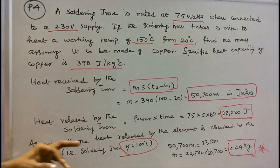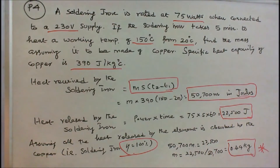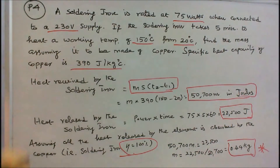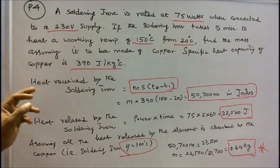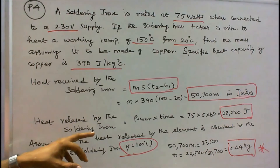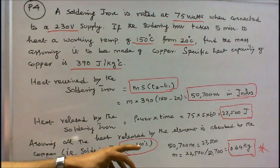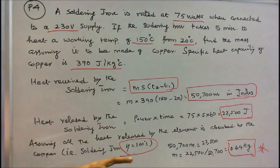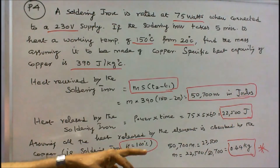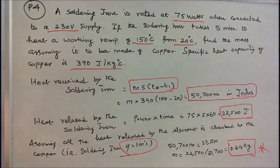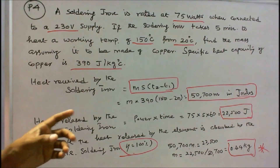Assuming all heat released by the element is absorbed by the copper (100% efficiency), heat received = heat released. So 50,700 M = 22,500, therefore M = 22,500 divided by 50,700 = 0.44 kg. The mass of the material is 0.44 kg.